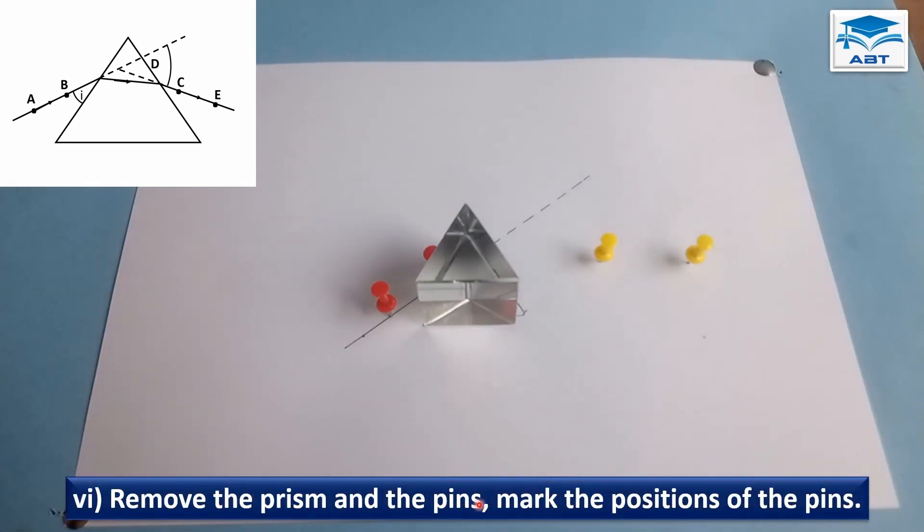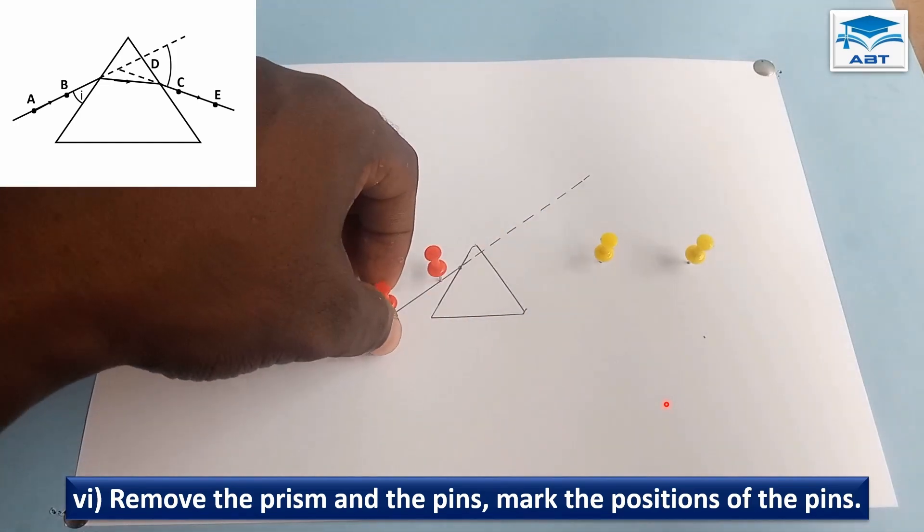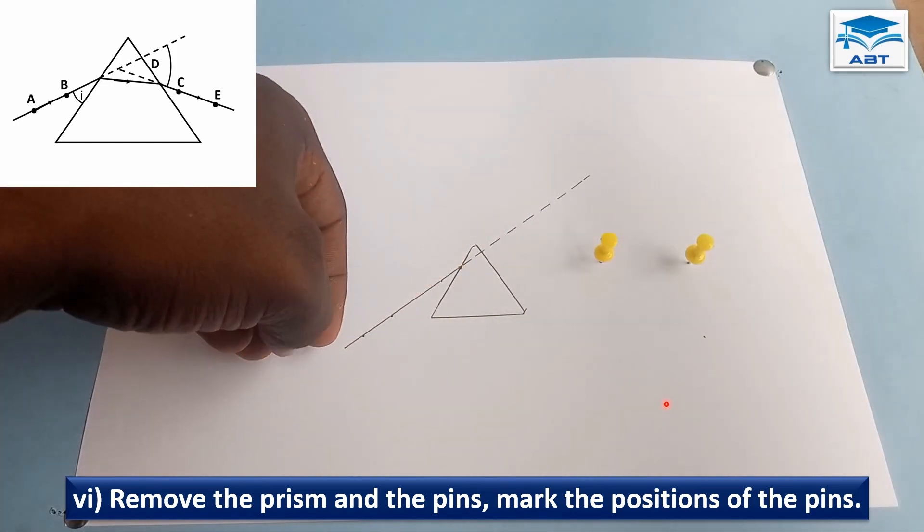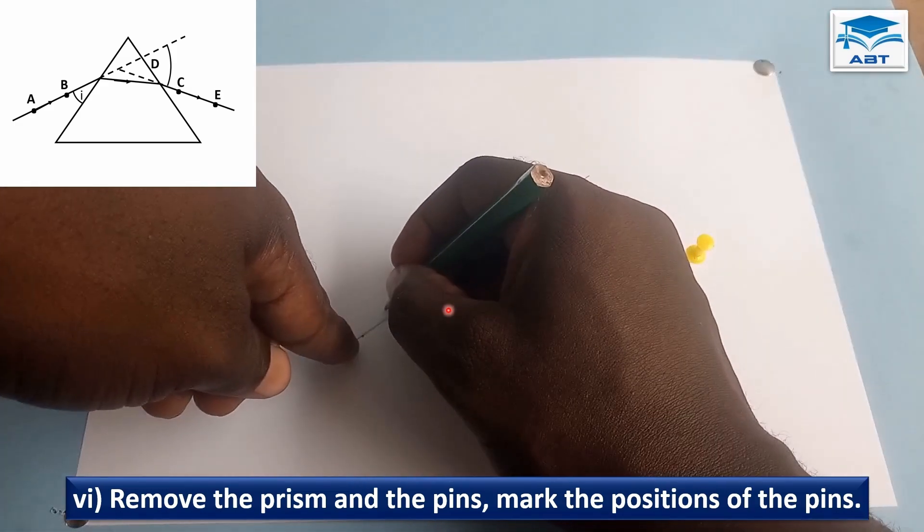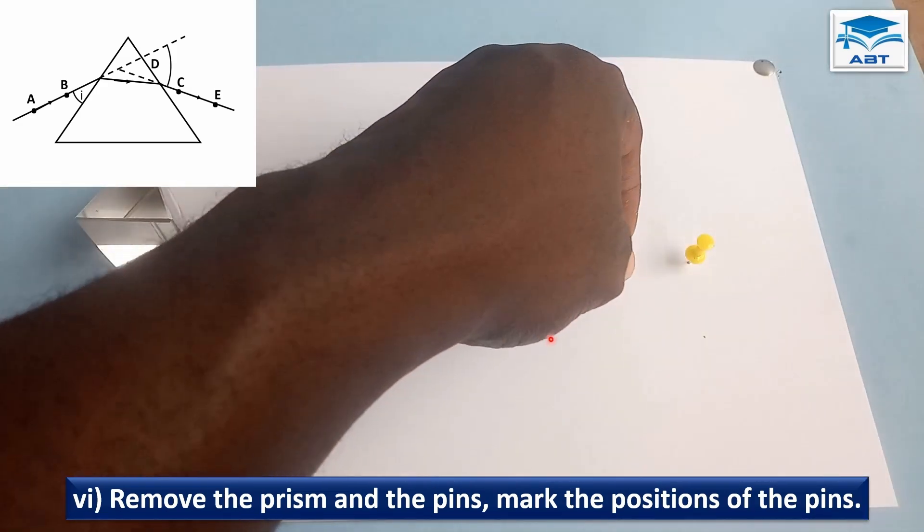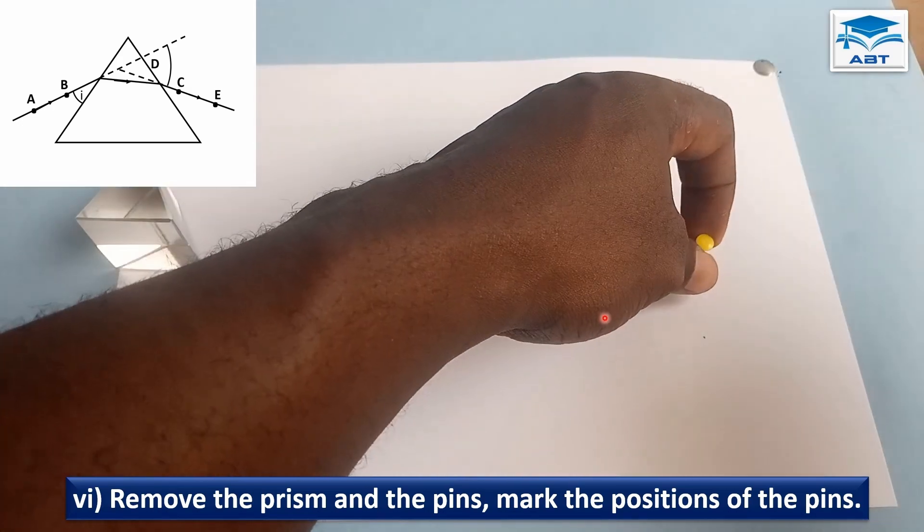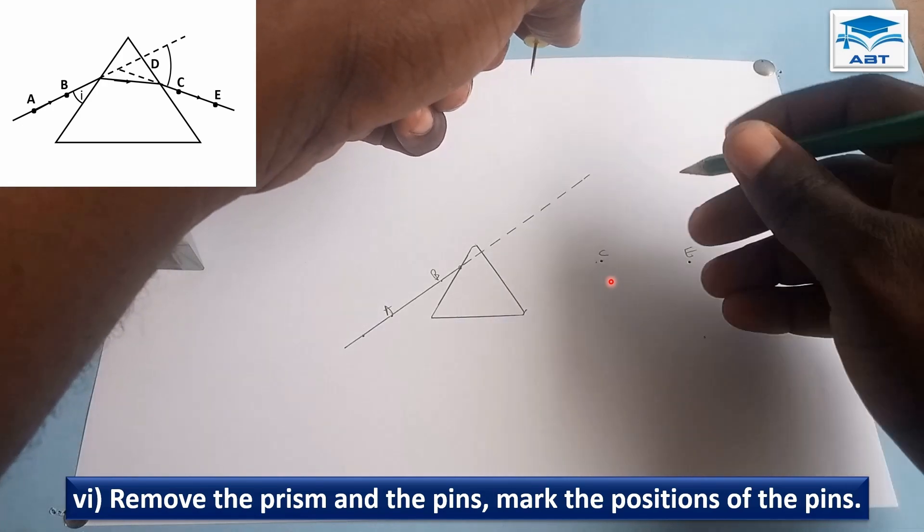Remove the prism and the pins. Mark the positions of the pins. So we have A here, B here, C and E.